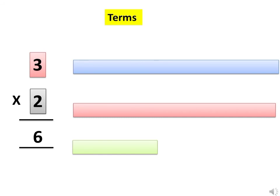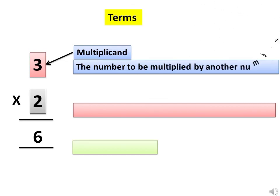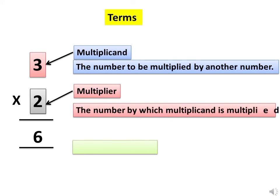3 is the multiplicand. That is the number to be multiplied by another number. 2 is the multiplier. Multiplier is the number by which the multiplicand is multiplied. And 6 is the product. That is the answer we get.